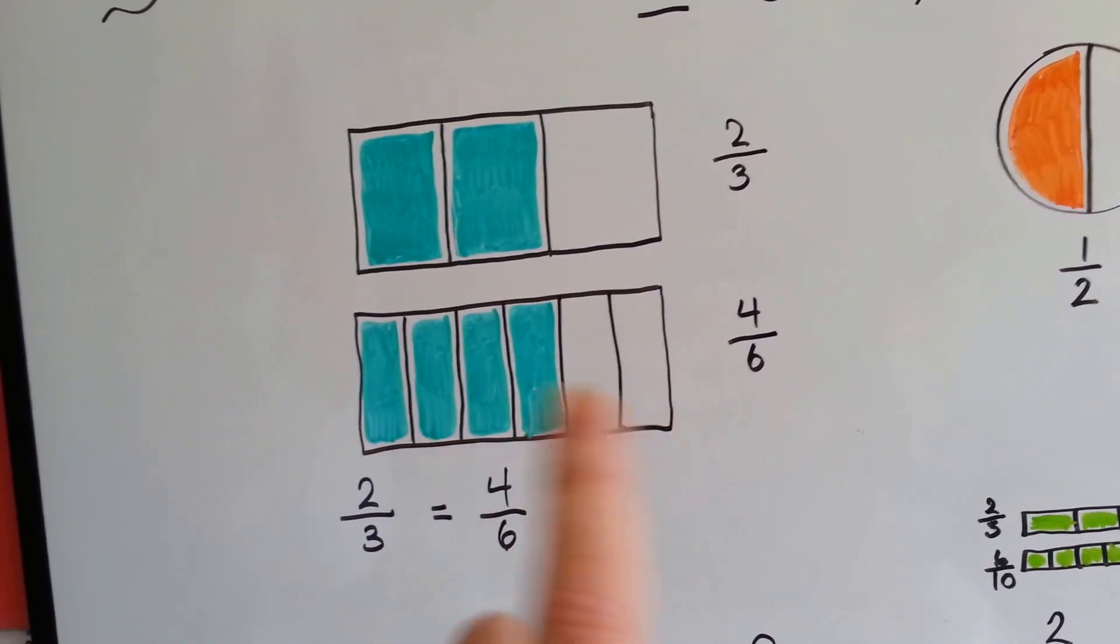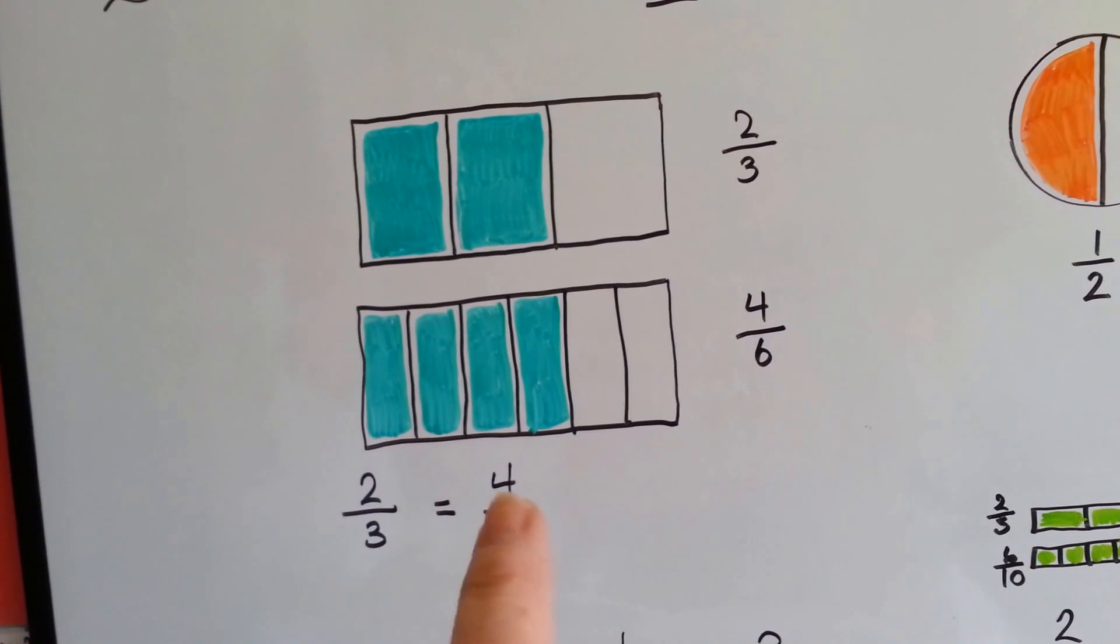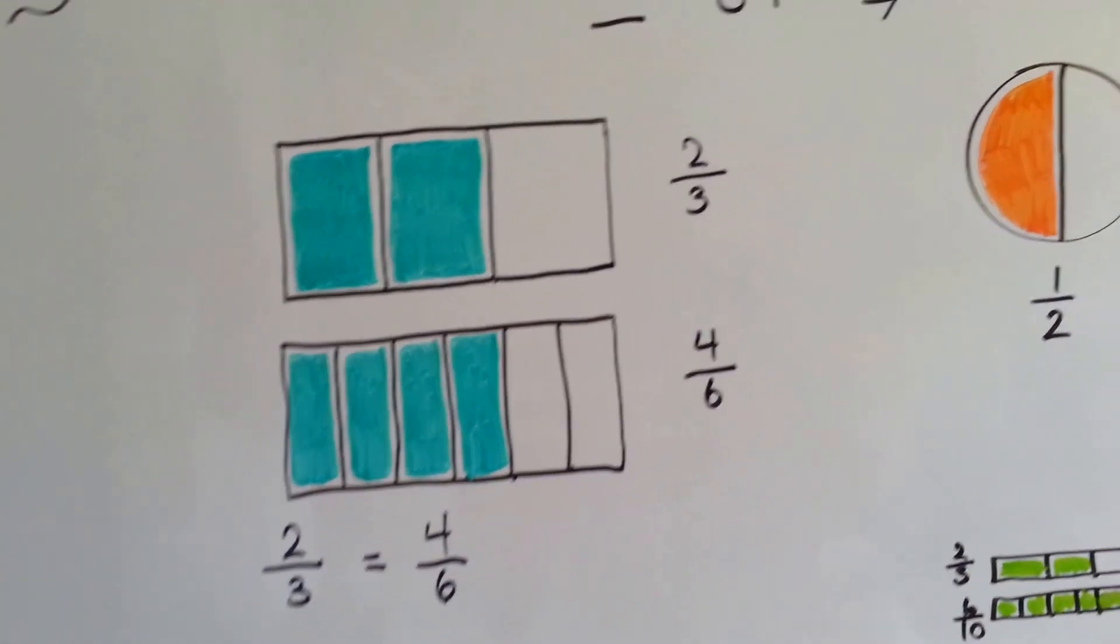So it was split into more parts, but equally. So two thirds is equal to four sixths.